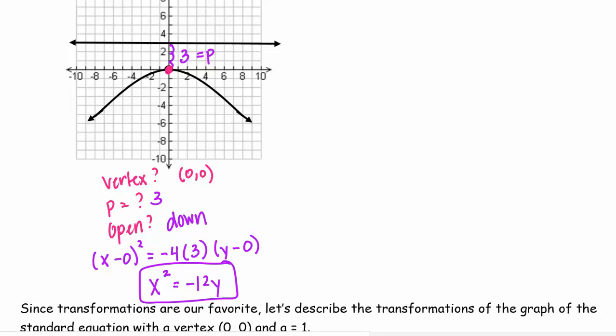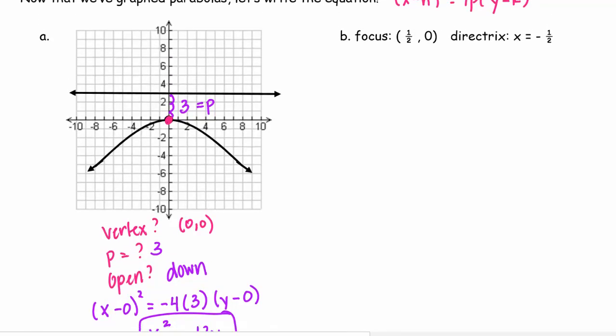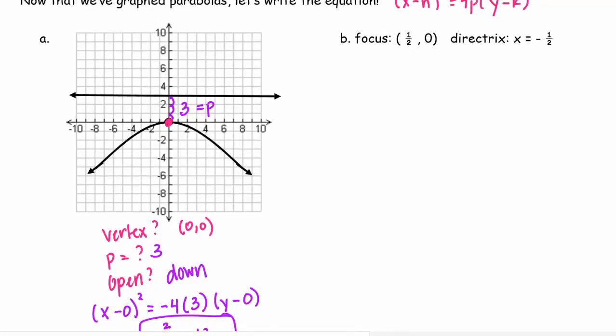Okay, again, you're looking for those three very important things. And it's always best if you have a graph to start with. So let's look at letter b. We're going to change this to (0, 1/2), and y = -1/2. Now I don't have a graph. I only have the focus and the directrix, which is good. I need that stuff, but it's always best to graph it first.